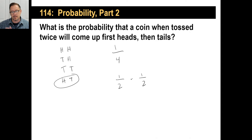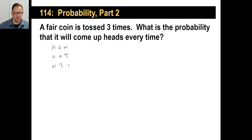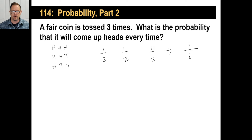A fair coin is tossed three times — what's the probability of coming up heads every time? The probability of heads each toss is one out of two. So you multiply one-half times one-half times one-half: that's one on top, and two times two times two equals eight on the bottom. So it's a one out of eight chance of flipping heads three times in a row.